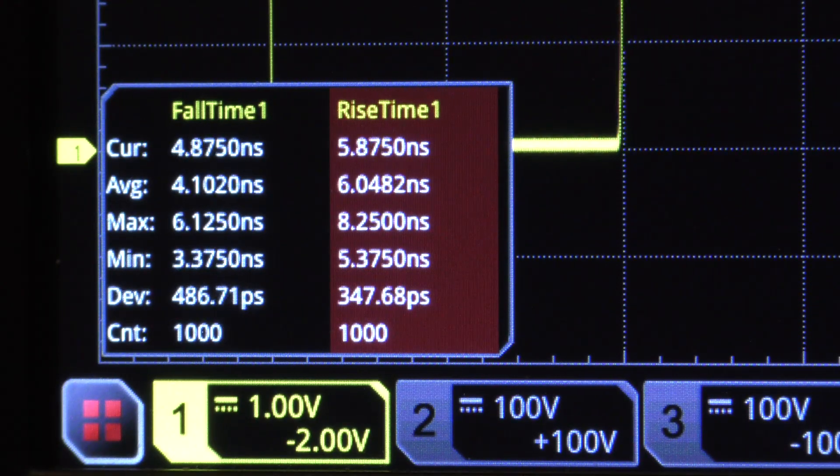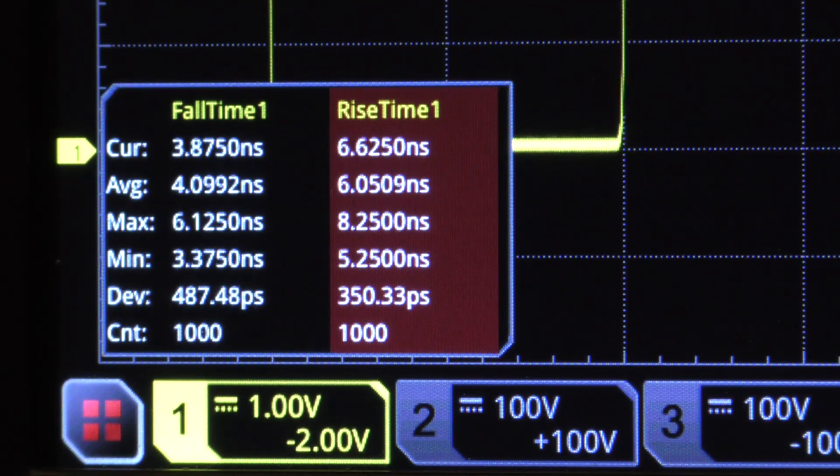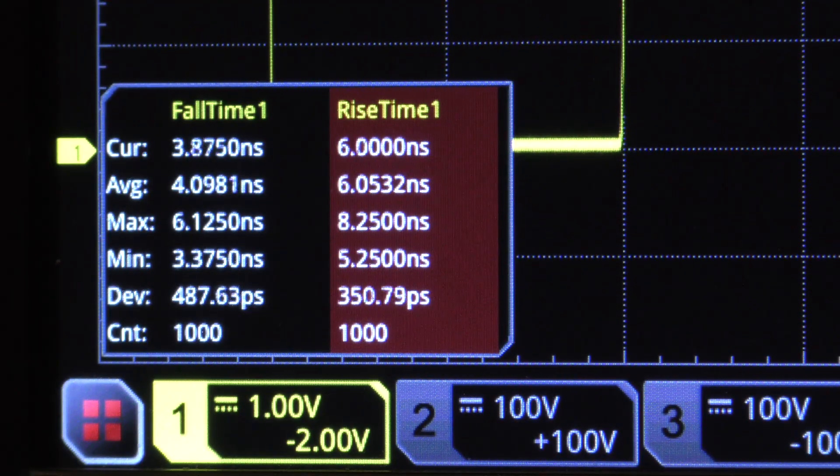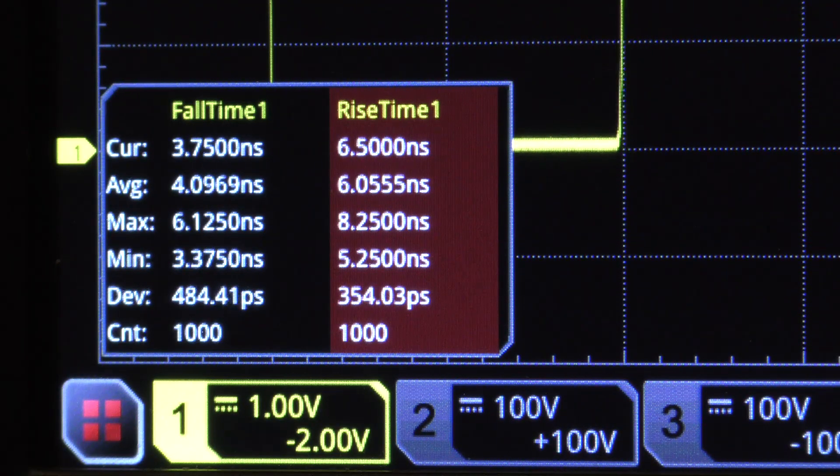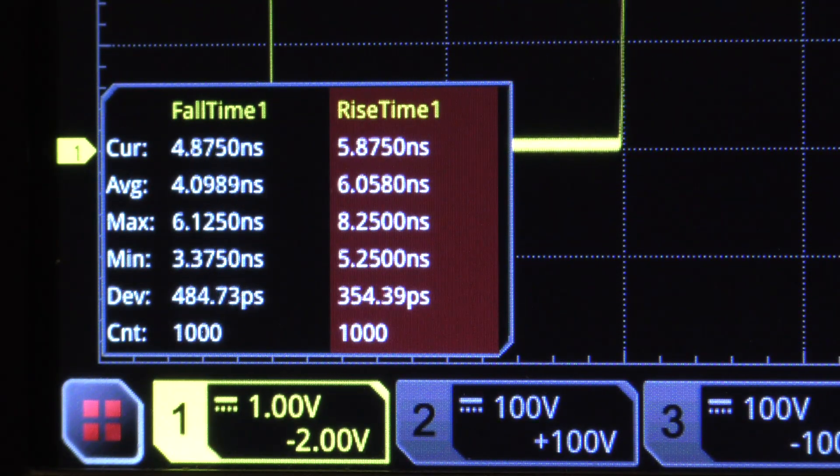We now have some statistical data to support that. How do we go about collecting this and why would we even care? The reason we care is that a signal that is rising or falling slower than it should, given the technology—for example, slow speed CMOS is going to have a much slower rise and fall time than say emitter coupled logic or Schottky logic.